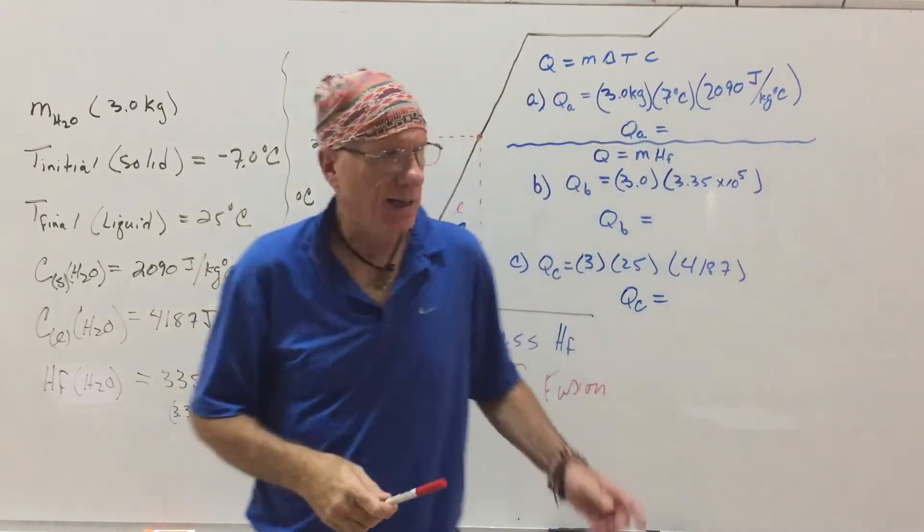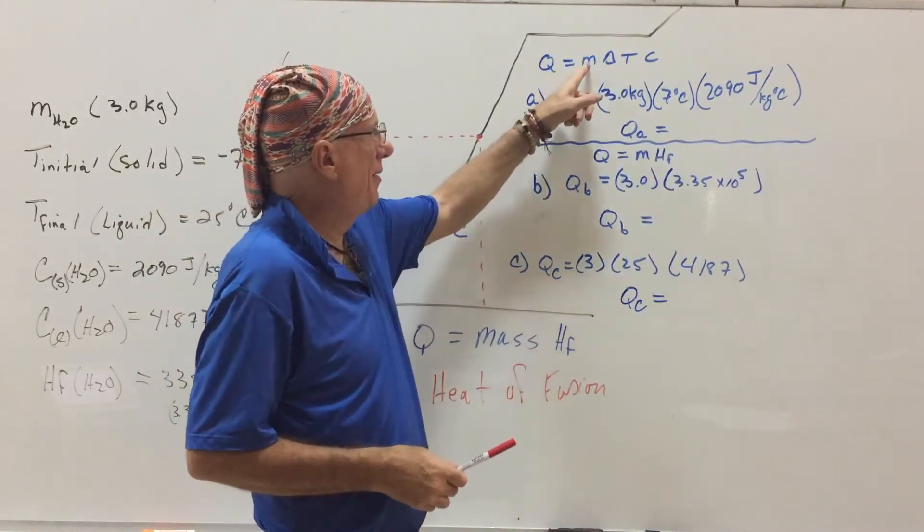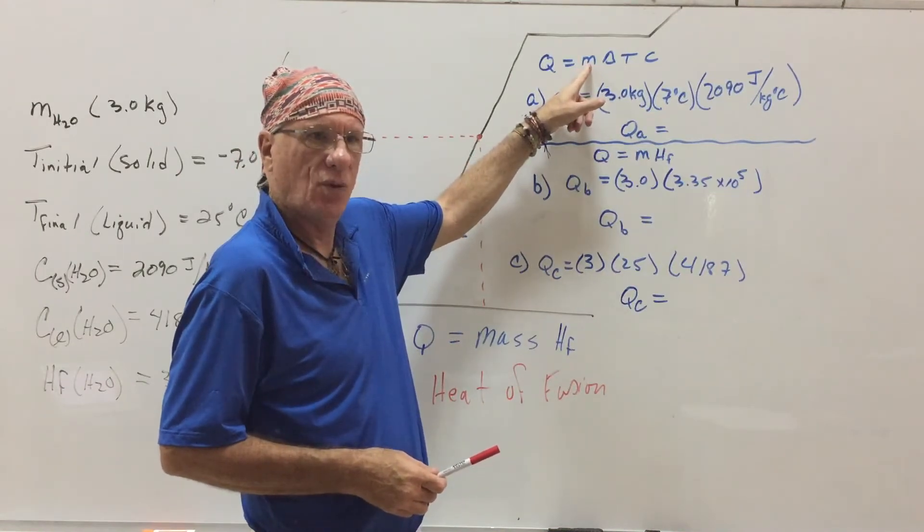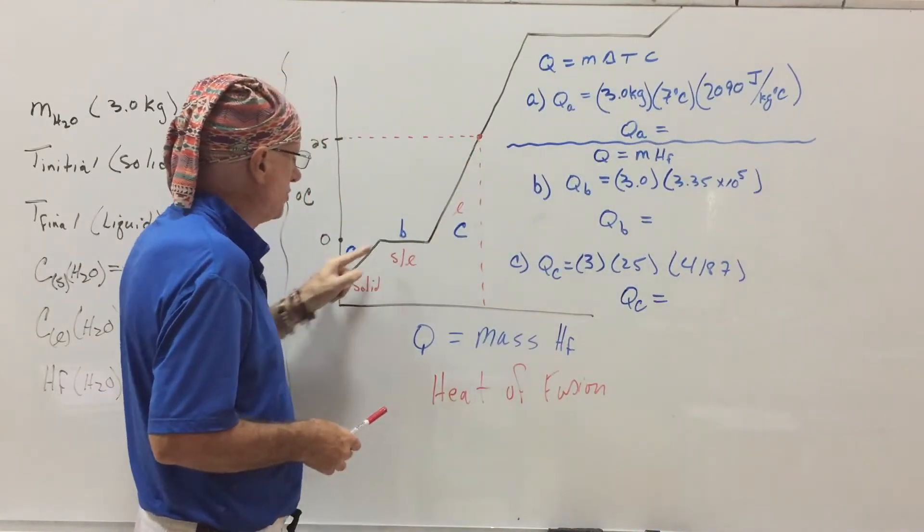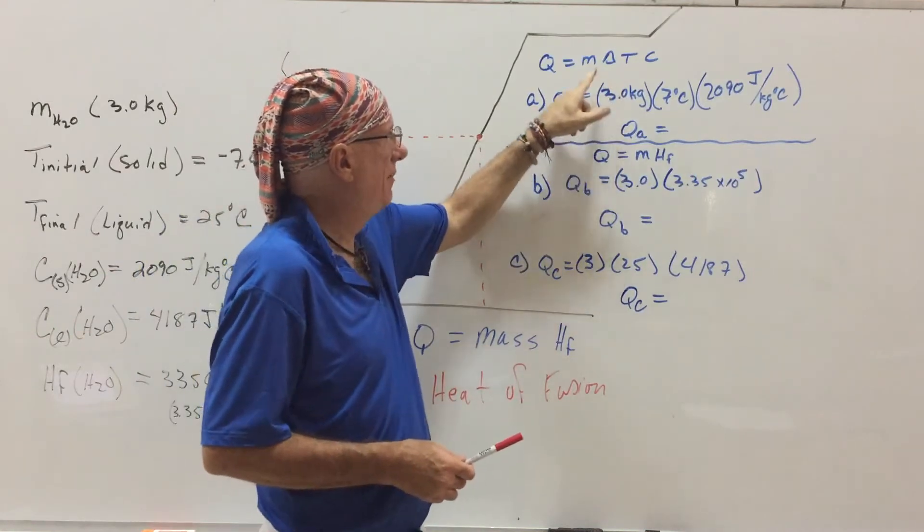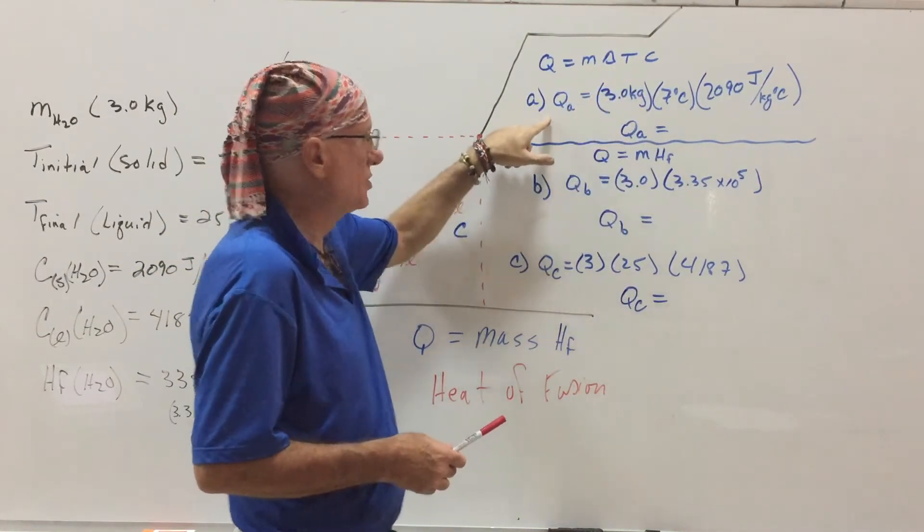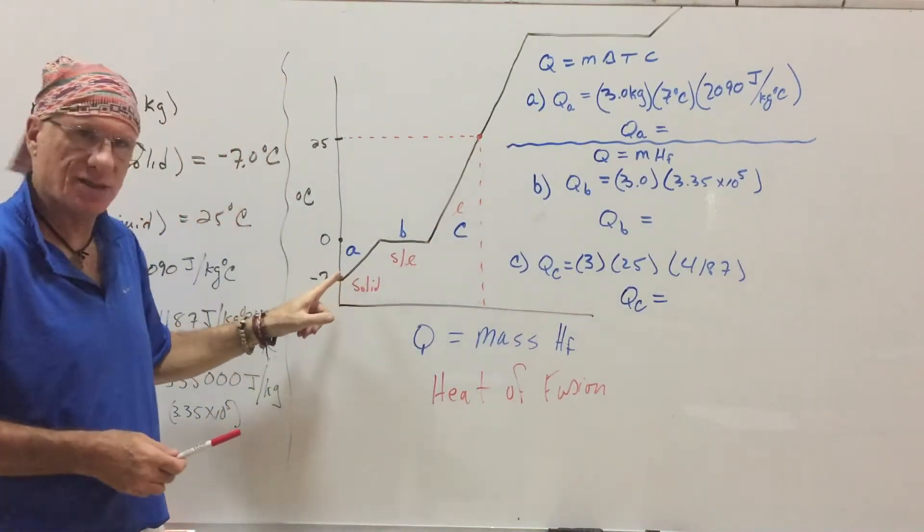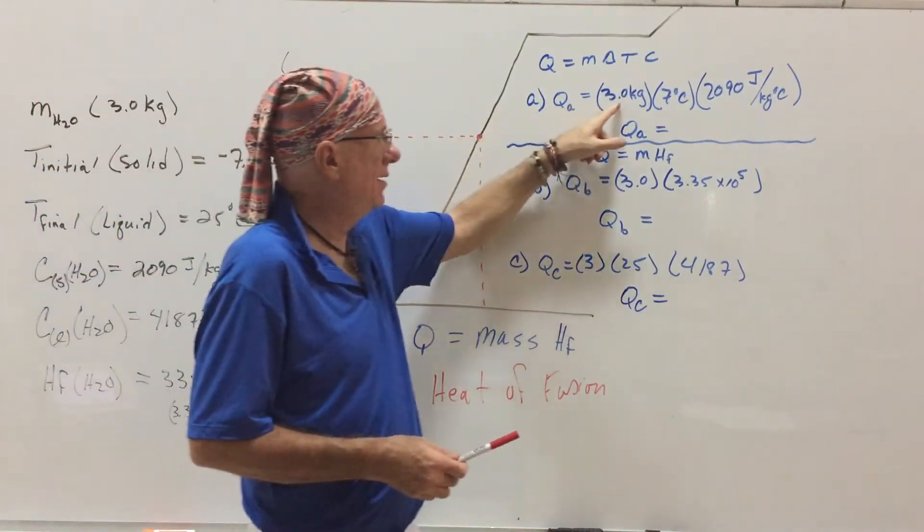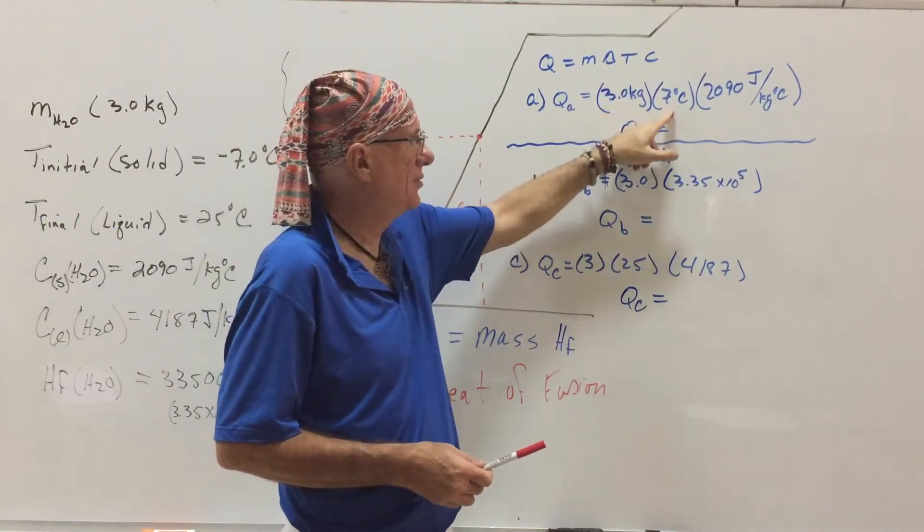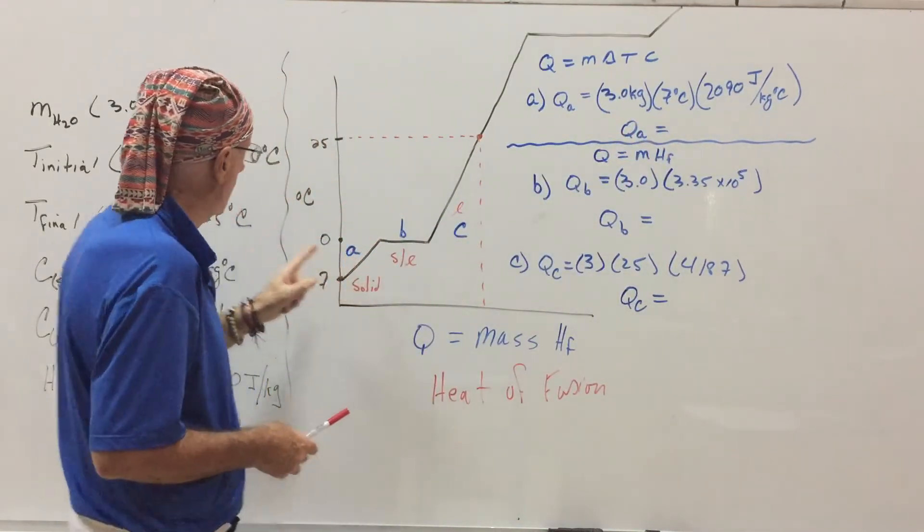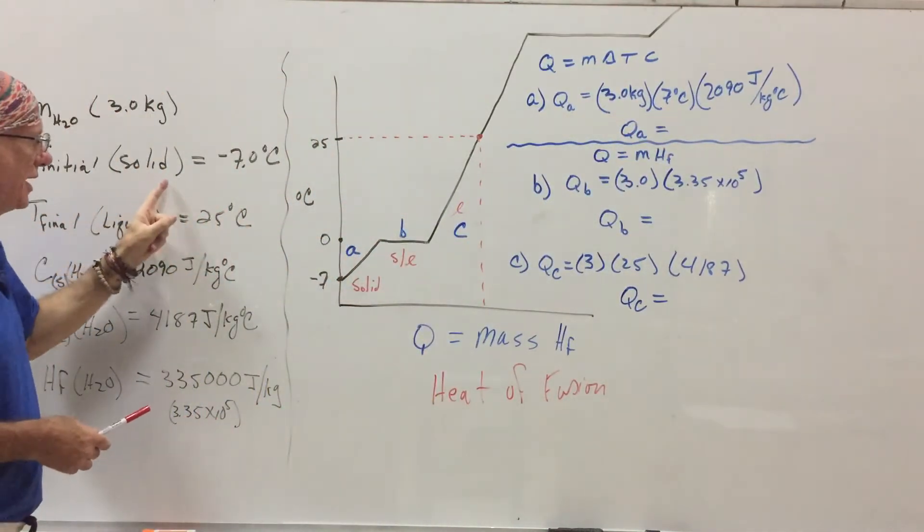A. QA is going to be, remember, if you're looking for the heat for the change in temperature, it's mass times the change in temperature times the specific heat capacity. So, A here is a solid, and it would be the mass, three kilograms. The temperature change is seven degrees Celsius. That's the temperature change. It's going to go from negative seven to zero. There's no negative sign.